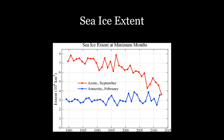These are the sea ice extents for the end of summer and the end of winter. Winter sea ice extent is relatively constant, but summertime sea ice extent has been rapidly falling — at less than half of the extent it was just 40 years ago.